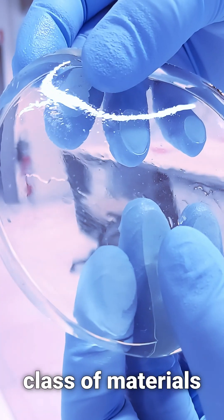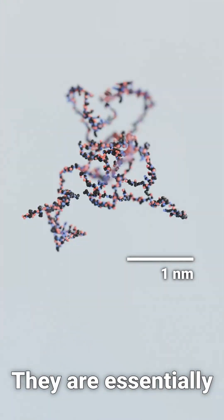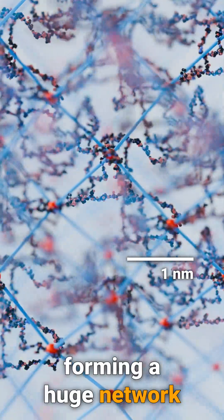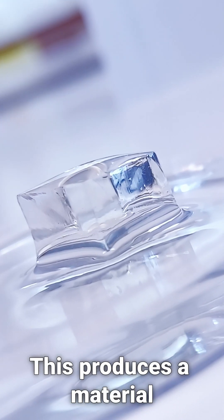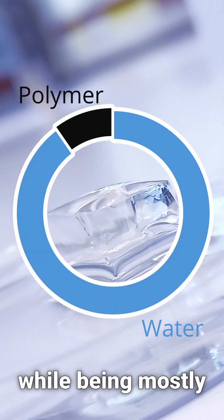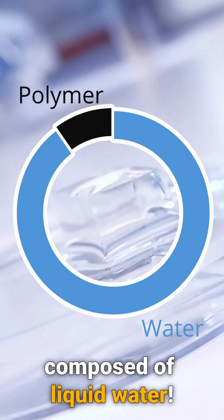Hydrogels are an amazing class of materials. They are essentially polymer chains forming a huge network trapping water within itself. This produces a material that behaves like a solid while being mostly composed of liquid water.